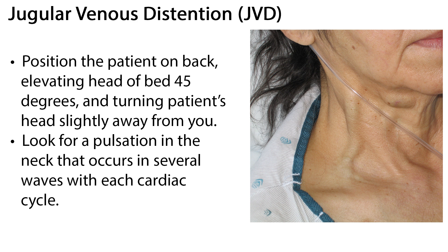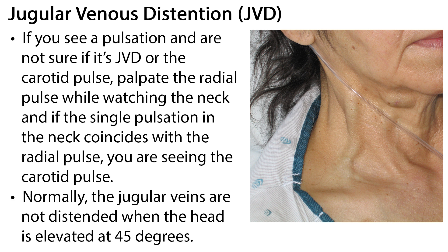Examine the extremities, looking for arterial or venous disorders, noting symmetry, edema, weeping, lesions, scars, and skin color. Check for jugular vein distension by positioning the patient on their back, elevating the head of the bed 45 degrees, and turning the patient's head slightly away from you. Look for a pulsation in the neck that occurs in several waves with each cardiac cycle. If you see a pulsation and are not sure if it's JVD or the carotid pulse, palpate the radial pulse while watching the neck. Normally, the jugular veins are not distended when the head is elevated at 45 degrees.